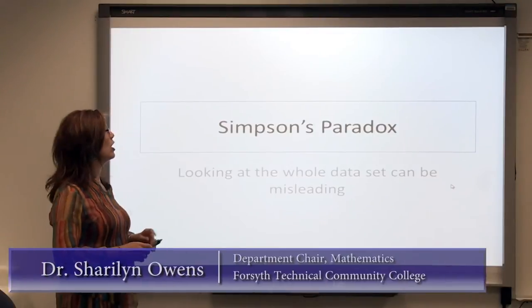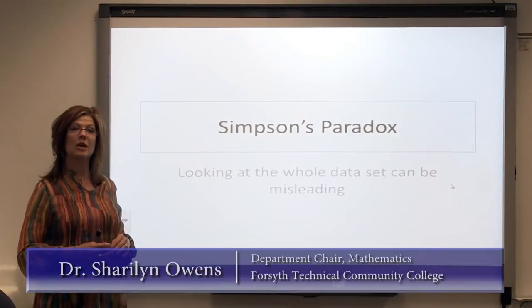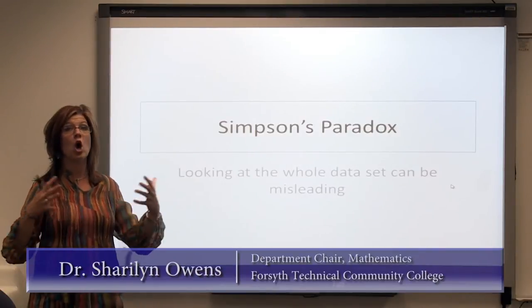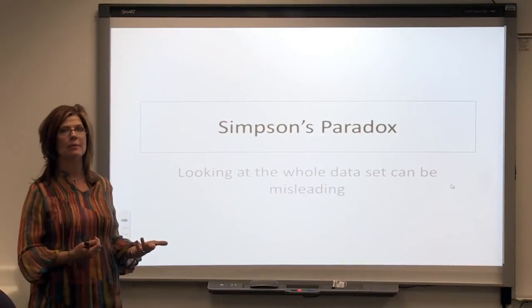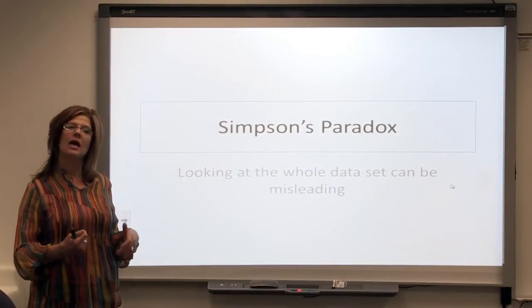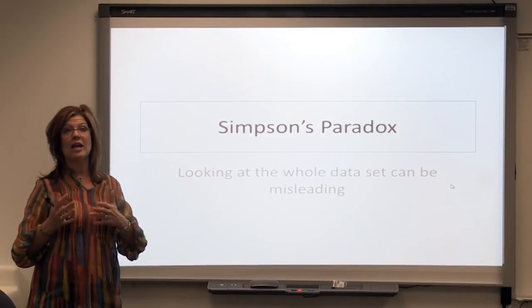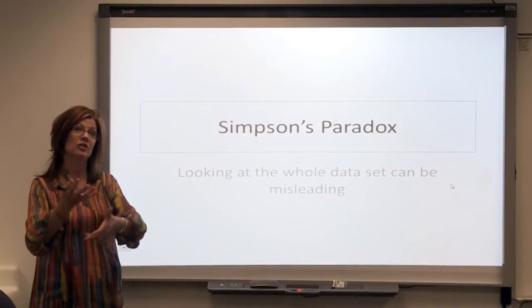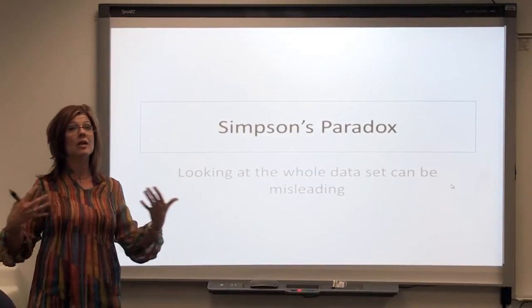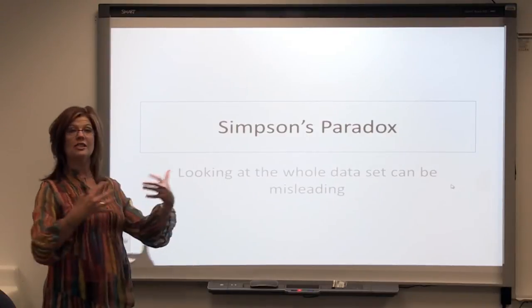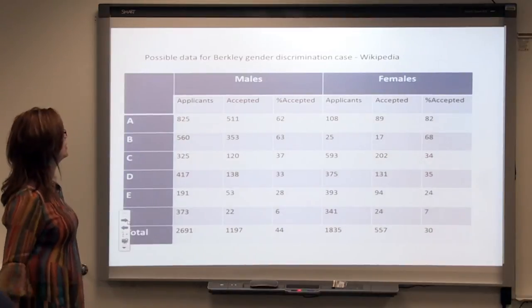We're going to look at an example called Simpson's Paradox. This is an example of how sometimes looking at the whole data set with one number can be misleading. It's not necessarily lying with statistics, but I can show you the piece of data that I want to convince you to think like I want you to think. Sometimes just the whole number data set doesn't paint a very clear picture. Let's look at a couple of examples.